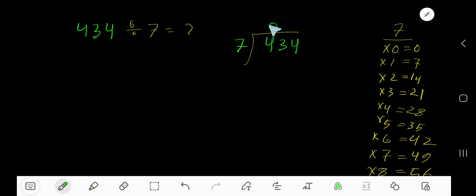As 4 is less than 7, so 0 times. 0 times 7 is 0. Subtract 4. Bring down this 3.